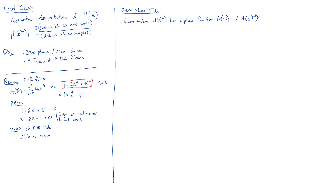Up to now, we really haven't been very concerned about the phase function at all. We've been concerned about the gain function — whether the gain is high at a particular frequency and low at another, making it a low pass, high pass, or band pass filter. But the phase does tell us one useful thing: it tells us if the filter distorts the shape of signals in the time domain.